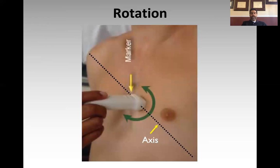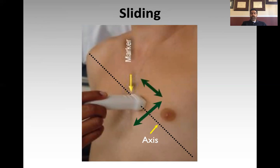Rotation is fairly obvious — you're actually changing the angle or the direction of the axis itself. I think this is fairly standard no matter what specialty you're in. Sliding is just moving the probe on the patient's chest. This becomes very important in echo and cardiac ultrasound. If you put the probe on the chest and you don't really like what you're seeing, what you don't want to do is lift the probe off and put it down on another spot. You actually want to look at the screen and slide the probe on the chest to enable you to get the view that you want.